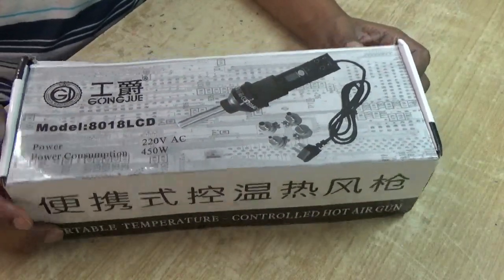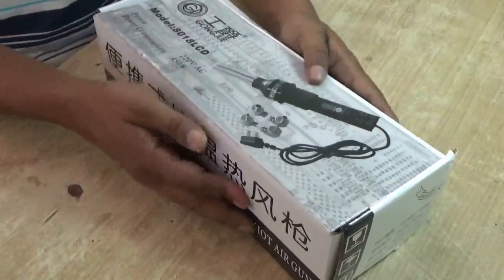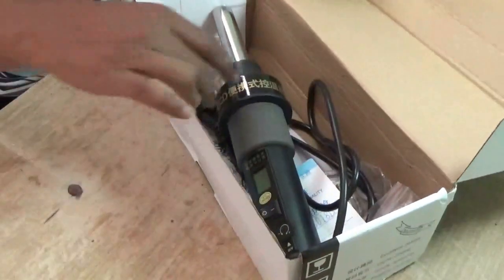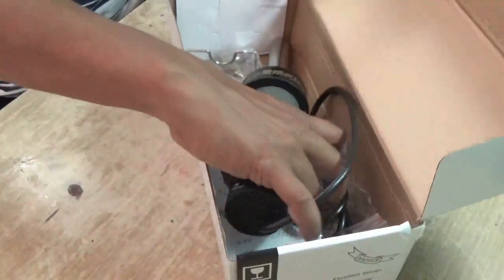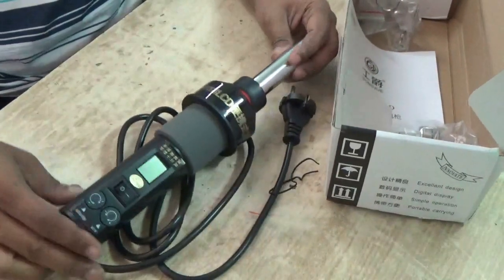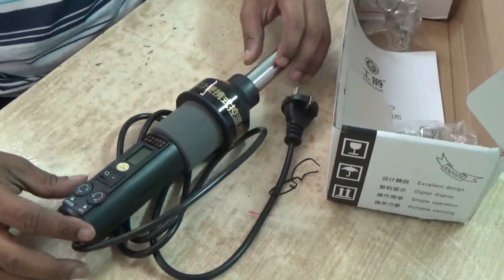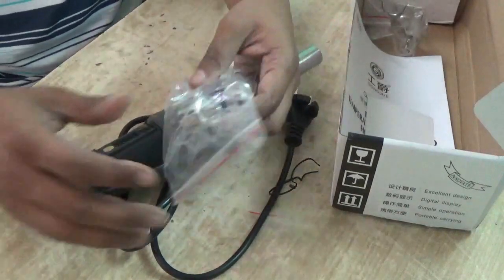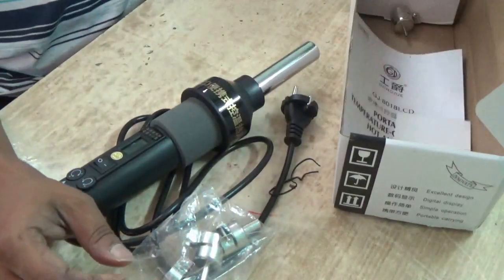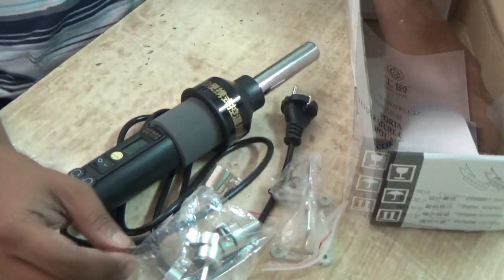Let's unpack it. This is the small hot air gun with inbuilt air pump. It comes with four nozzles of different diameters, a stand, and a manual book.